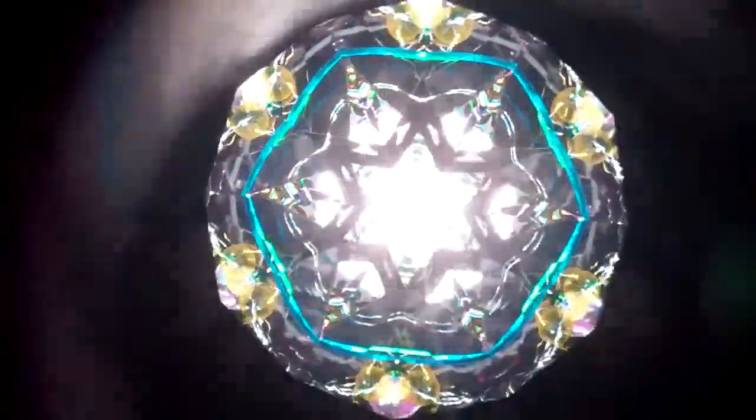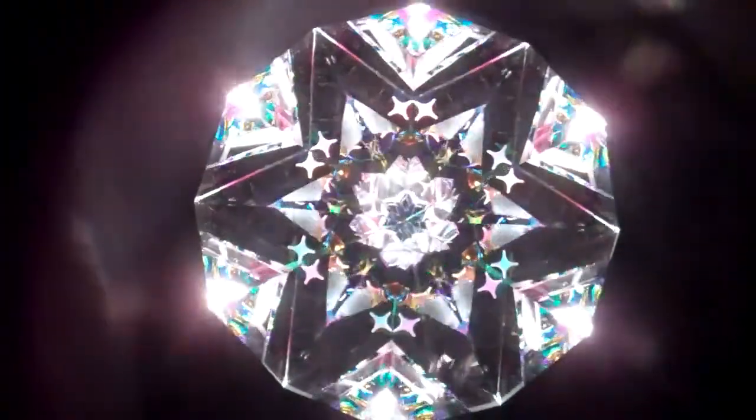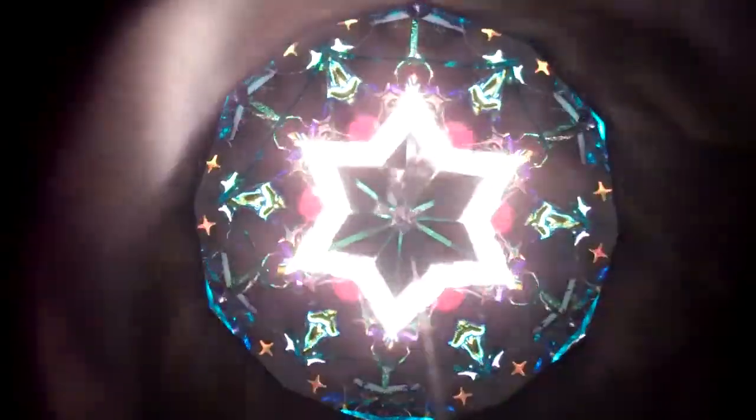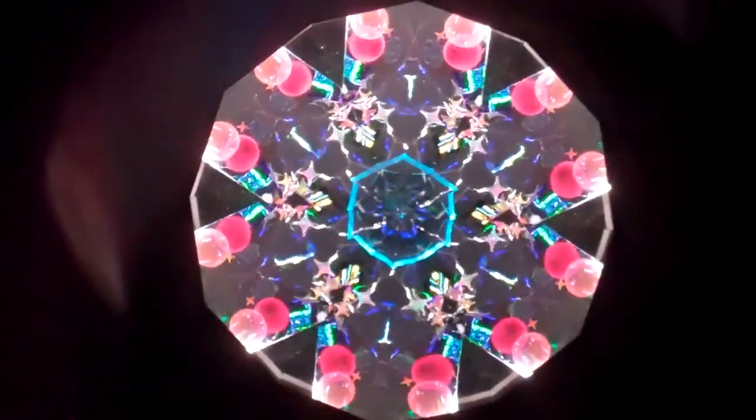The Color Spirits feature a 6 point star 2 mirror system and an oil chamber and this one is the Northern Lights. The object chamber features dichroic glass, mylar, tiny pieces of front surface mirror.